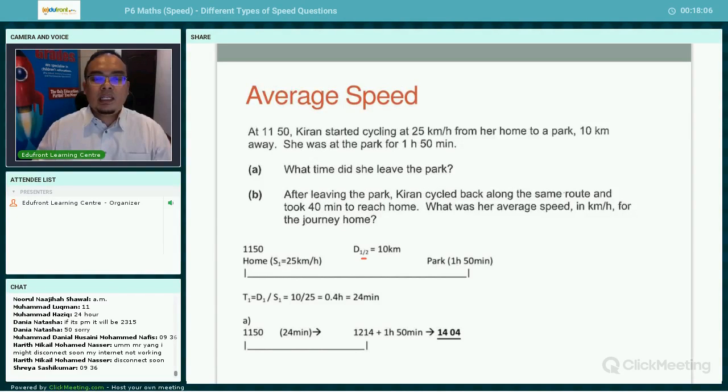At what time did she leave the park? Time 1 equals distance divided by speed. The distance is 10 kilometers and the speed is 25 kilometers per hour. You get 0.4 hours or 24 minutes. So the time taken is 24 minutes from home to the park for the first part of the journey.